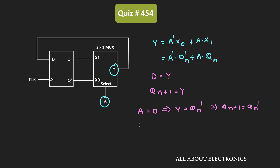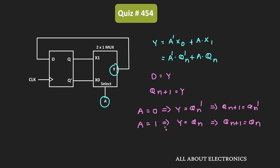Likewise, when A is equal to 1, then Y is equal to Qn, meaning Qn+1 is the same as Qn. So whenever the selection input A is equal to 0, the next state of the flip-flop will get complemented. And when A is equal to 1, the next state of the flip-flop will be the same as the present state.